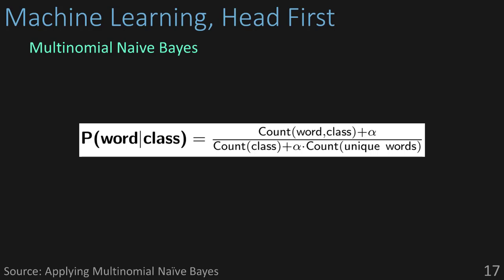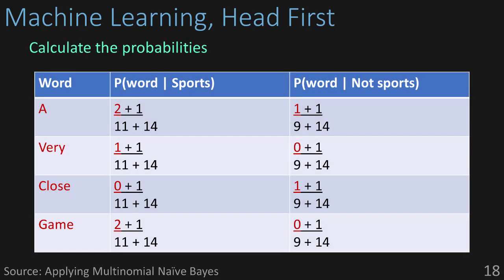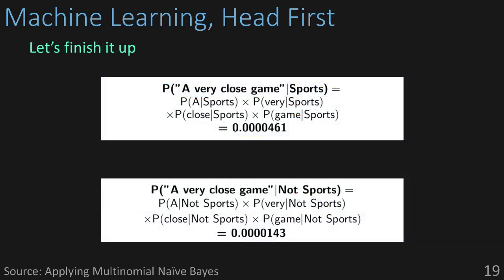Let's take another look at our table. If we count the total number of words in each class, we'll get 11 for sports and 9 for not sports. Then, if we count the total number of unique words across both classes, we'll get 14. Lastly, we can get the individual counts of each word in each class like we did earlier. Once we have our counts, we'll just plug them in to get their new probabilities. Finally, we've plugged those probabilities into each of our original formulas for sports and for not sports. When we calculate everything out, we'll get 0.0000461 for sports and 0.0000143 for not sports, classifying the sentence 'a very close game' as being about sports.